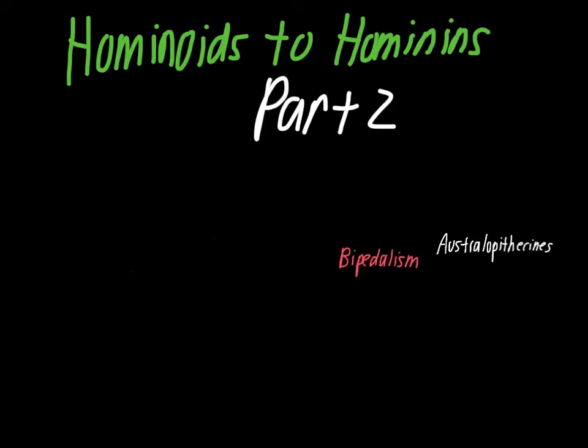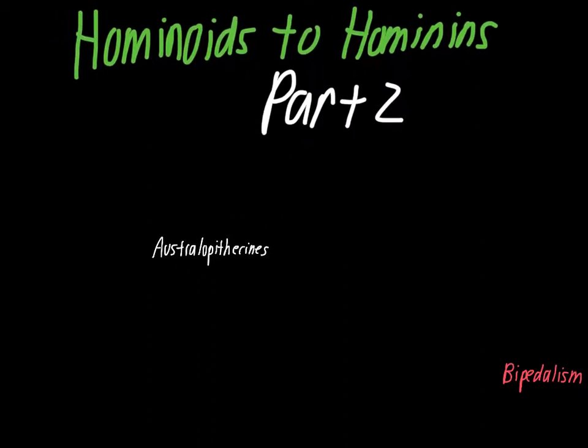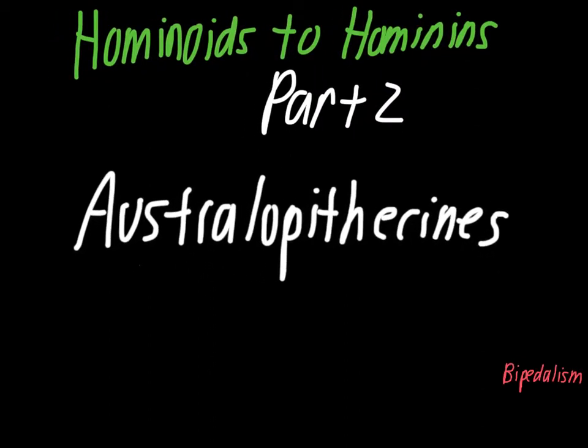The ones we're going to be talking about mostly in this video are referred to as australopithecines. These fall into the genus Australopithecus and they are similar to modern people, but not that closely related to us. We're Homo sapiens, so in order for something to be closely related to us as far as classification is concerned, it has to share the same genus name. Australopithecus groups are the ones most closely related to humans, but not in the same genus. We'll take a look at some of the fossil evidence for individuals of this group as we work through this video.